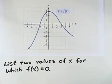We want to use the graph to answer the question, which wants us to list two values of x for which f(x) equals 0. That's the same as saying, what are two values of x when y equals 0?